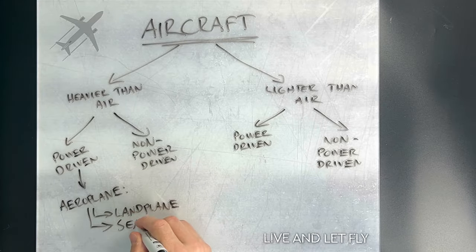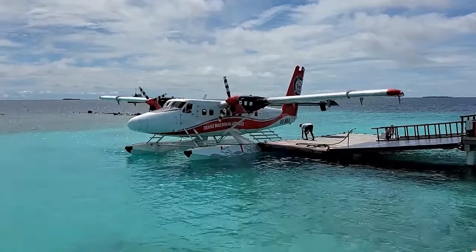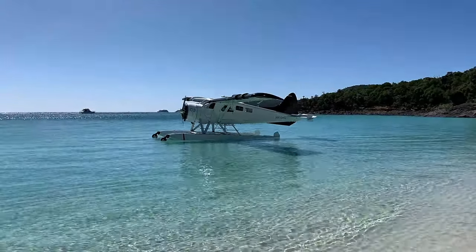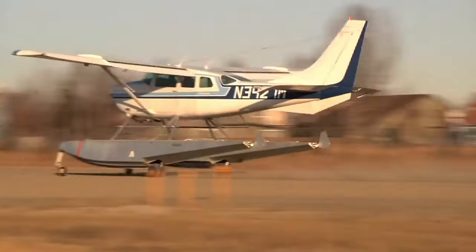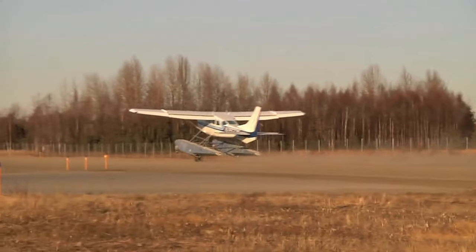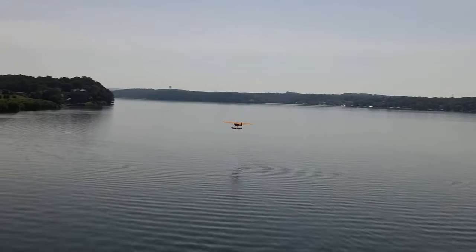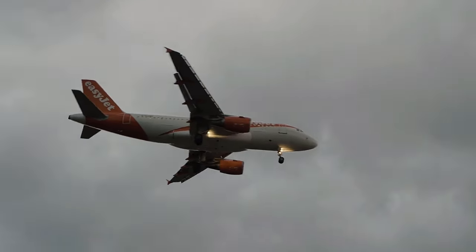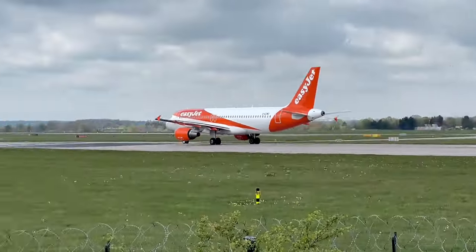Seaplanes are designed to operate solely on water surfaces, commonly used for water landings and takeoffs, perfect for regions with abundant lakes or coastlines. Amphibian aircraft can operate on both land and water surfaces, offering incredible flexibility for various missions. All of these are fixed wing aircraft — the workhorses of the aviation world. A fixed wing aircraft is heavier than air and relies on the dynamic reaction of air against its stationary wings to support itself in all phases of flight.